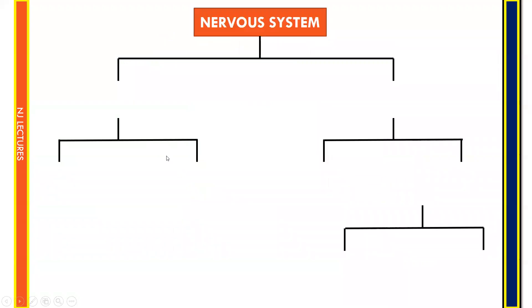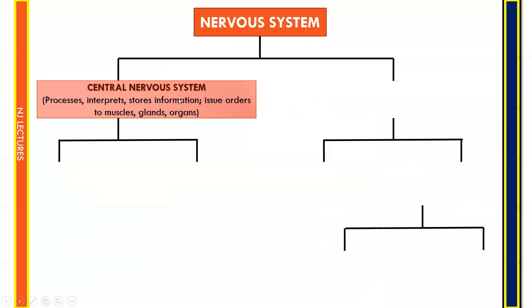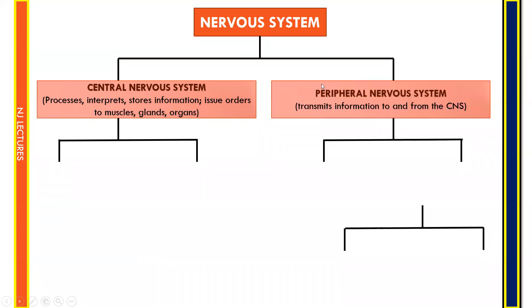The nervous system has two main divisions. The first is the central nervous system, whose main function is to process, interpret, and store information, and issue orders to muscles, glands, and organs. The second division is the peripheral nervous system, which transmits information to and from the central nervous system.